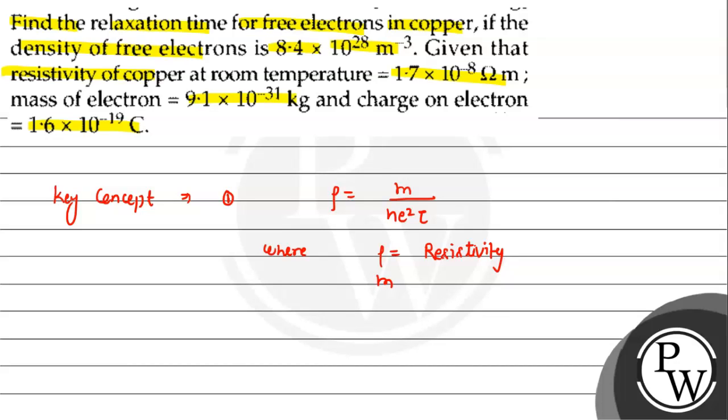In this formula, m equals mass of electron, n is the number of electrons per unit volume, which is the density of free electrons. So we have to rearrange this: m, mass of electron, upon rho n e square.